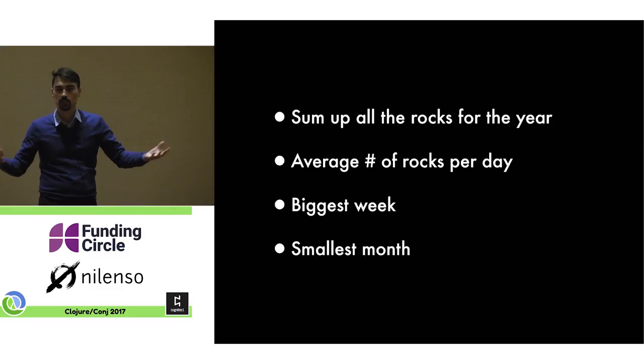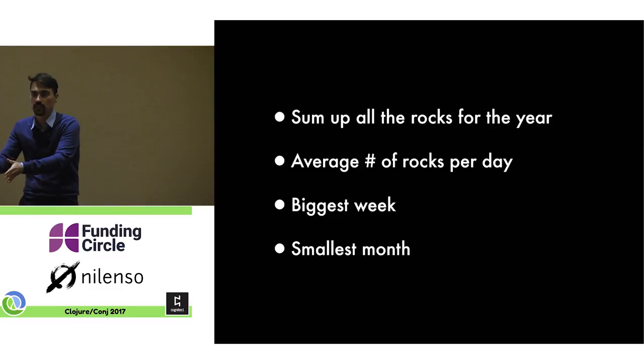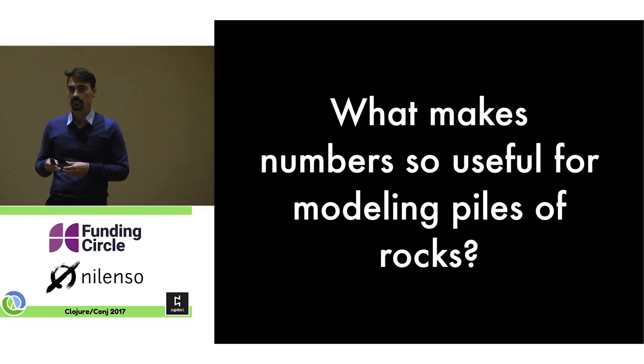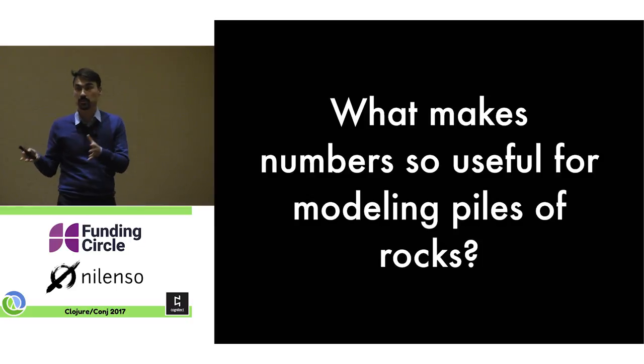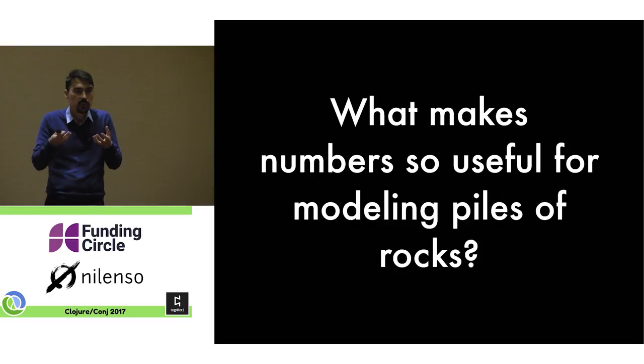They're totally different processes. One is bits in the machine, it's moving stuff around in memory, and the other is manipulating physical objects. So when we translate one process to another, there must be something that is preserved. Something essential to that process, that goes from the physical process to the software process. So what is it that makes numbers, as an example, so useful for counting piles of rocks? That's the question I'm trying to answer.